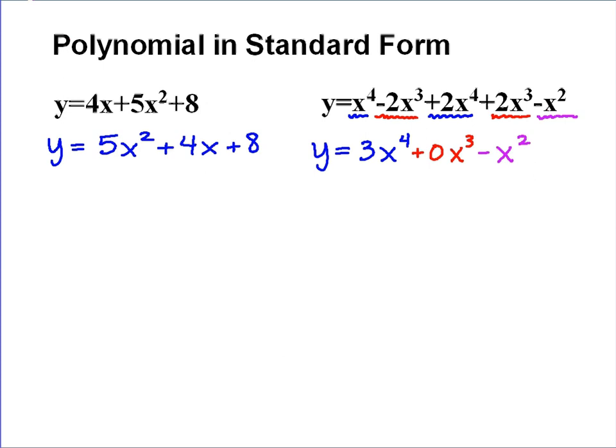When I write my final answer for this, I wouldn't even write this part in there. I would just write y equals 3x to the fourth minus x squared.